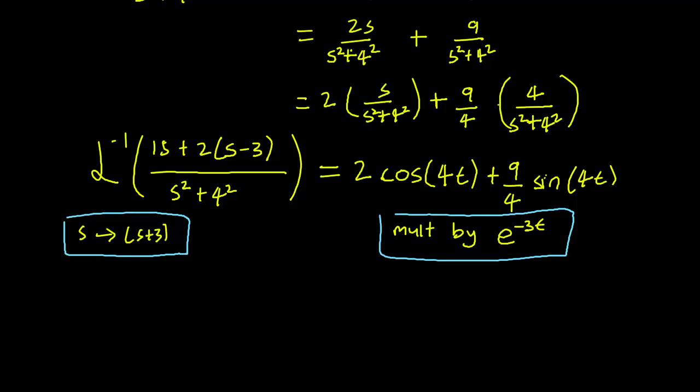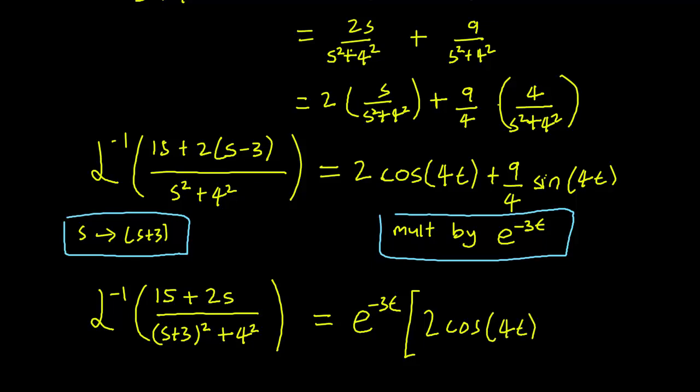And this just means that we have the Laplace inverse of 15 plus 2s over (s plus 3) squared plus 4 squared is equal to e to the minus 3t times the stuff we had before: 2 cosine 4t plus 9 over 4 sine 4t.